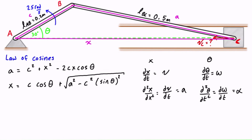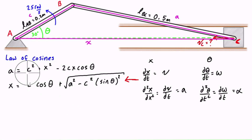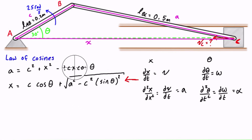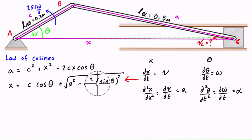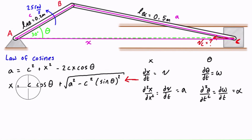Let's use the version of the law of cosines where x is already by itself on the left-hand side. If we used the first form, we'd have an x² term and also an x, making it a huge mess to rearrange. The second form already gives us x directly, so let's go with that.